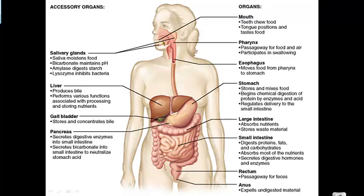Your tongue allows you to swallow the bolus into your pharynx. There's a little flap of skin called the glottis, and it covers over your windpipe when you swallow food so food doesn't go down into your lungs. When you're breathing, it covers your esophagus so air doesn't fill up your stomach. The glottis covers different holes depending on what you're doing.